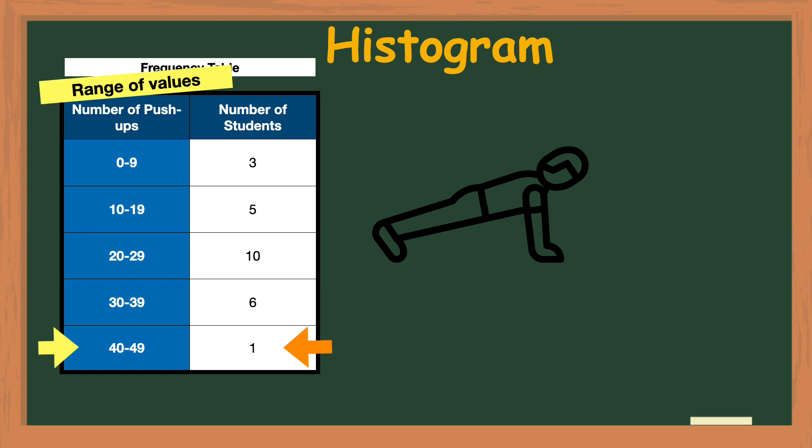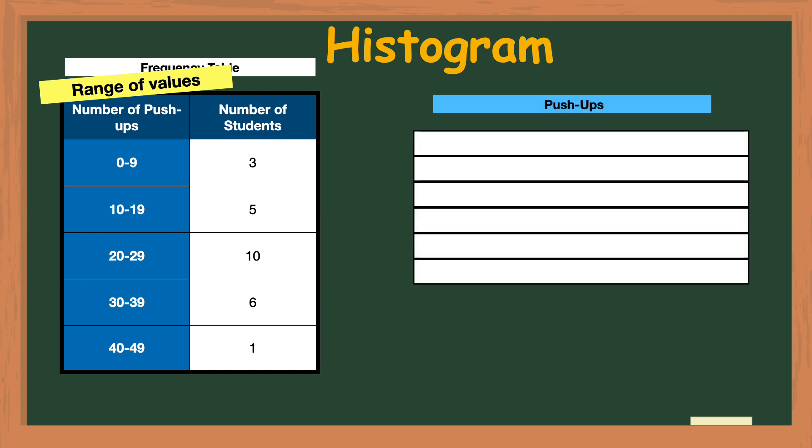Now we are ready to create the graph or the histogram. The horizontal or x-axis always represents the range of values. So for this histogram the x-axis will represent the ranges for number of push-ups completed. The vertical or y-axis always represents the frequency or how many in each range. So the y-axis here will represent the number of or how many students.